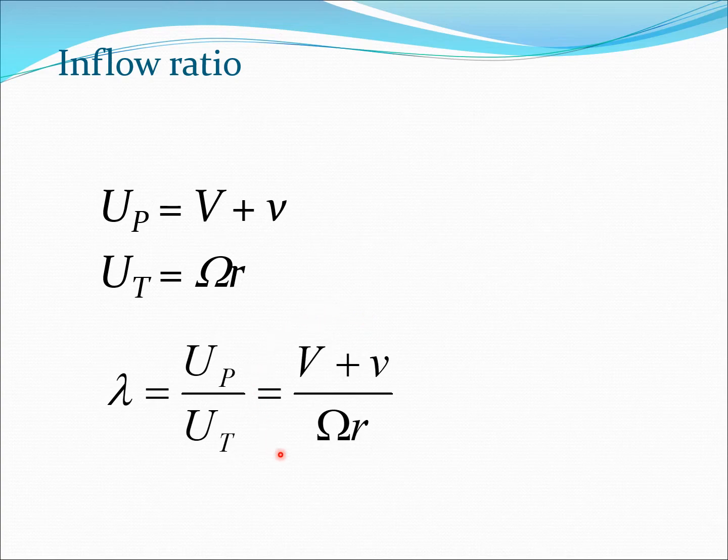If you recollect from the lecture on climb, this would be same as lambda, the inflow ratio. So essentially this important part small v or lambda or up is coming to us from a different theory. BET cannot calculate small v; it has to come from momentum theory, vortex theory, or some other theory.